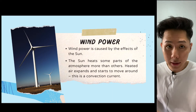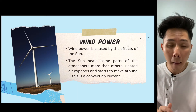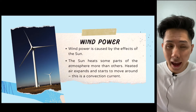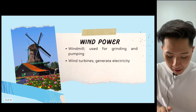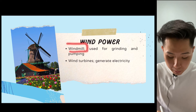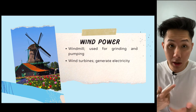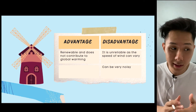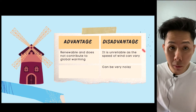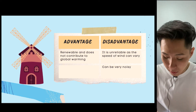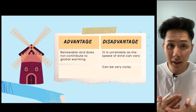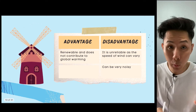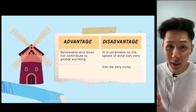Second is wind power. Wind is also caused by the effects of the sun, because the sun heats up air, and due to convection, hot air rises, creating convection currents which is the wind. Wind power can be used in windmills for grinding and pumping, while wind turbines generate electricity. The advantage is that it's renewable, does not contribute to global warming, and there's no air pollution. The disadvantage is similar to solar — it's unreliable because wind speed can vary, it can be very noisy, and a large space is needed to install wind turbines, which may not be land-efficient for small countries like Malaysia or Singapore.